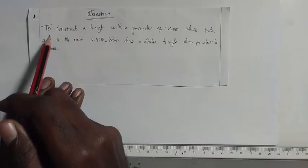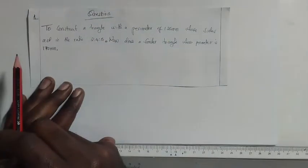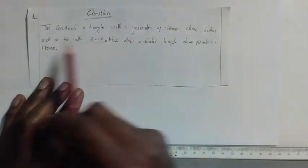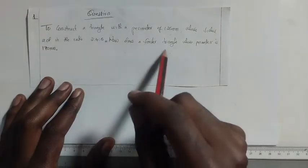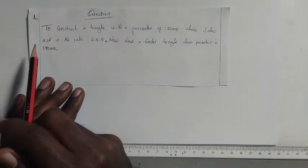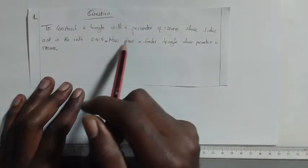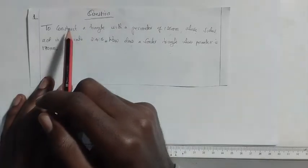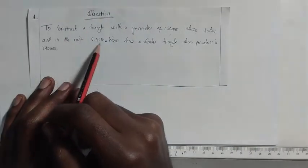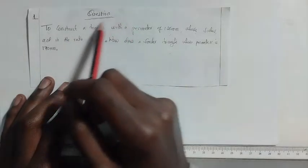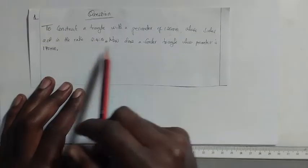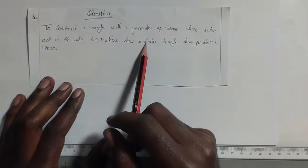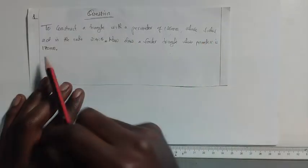We have been given a question which requires us to construct a triangle with a perimeter of 125 millimeters whose sides are in the ratio 2:4:5. Then draw a similar triangle whose perimeter is 170 millimeters. So in this question we have two sections: section one is constructing the triangle with a perimeter of 125 millimeters in the given ratio, and section two is to draw a similar triangle with the new perimeter.